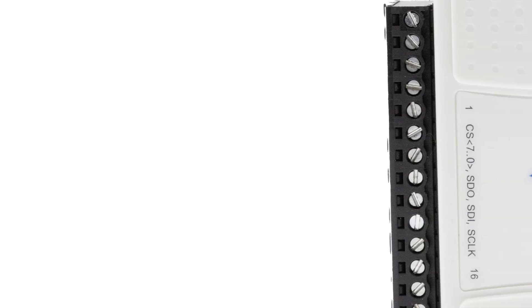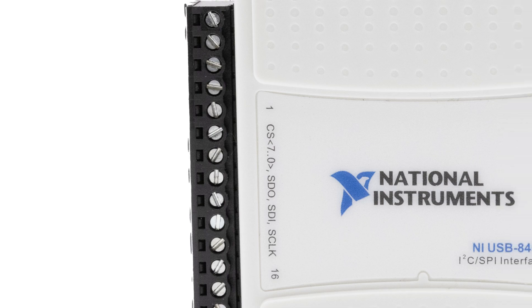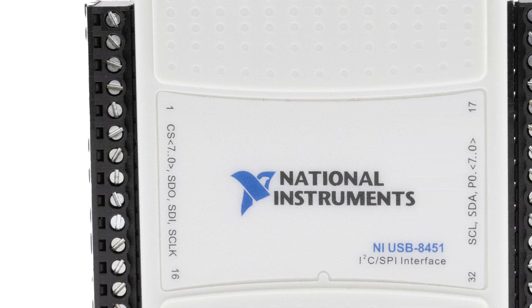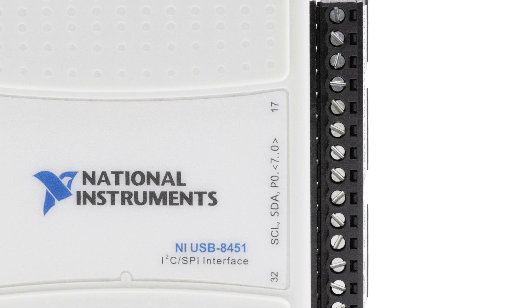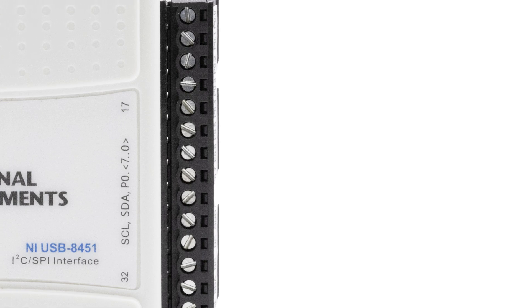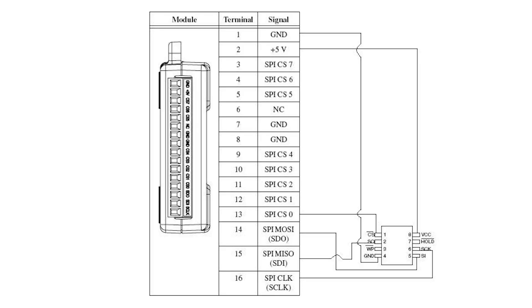Unlike PCI interfaces, this interface device can be used in proximity of I2C and SPI devices, reducing I2C bus length and other problems related to noise. The USB 8451 is a self-sustained device and does not need an external power supply. The USB interface provides GND and plus 5 volts to power its internal circuits. It offers integrated protection against overcurrent, overvoltage, and undervoltage conditions on each SPI, DIO, and SPI-CS signal.